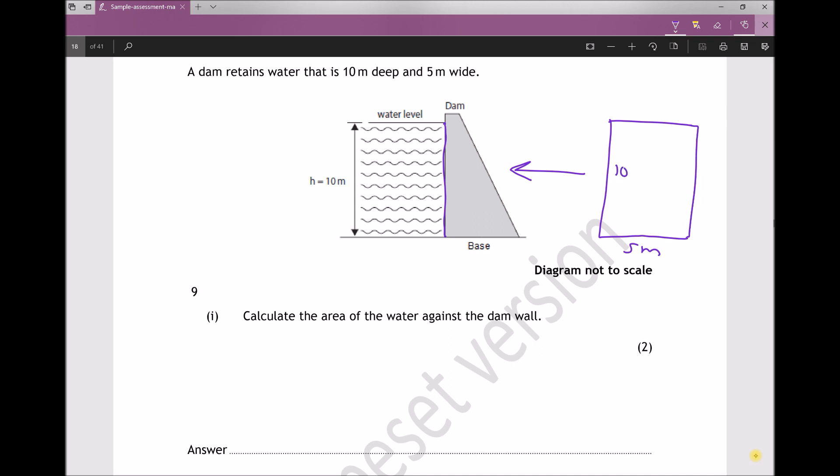So this length here is 10 meters and the width is 5 meters. That area there is in contact with the fluid itself. Now this is a very straightforward area calculation because the area is just the width times the height. So 10 times 5 is 50 meters squared. So what we have there is a very easy way to collect these two marks.